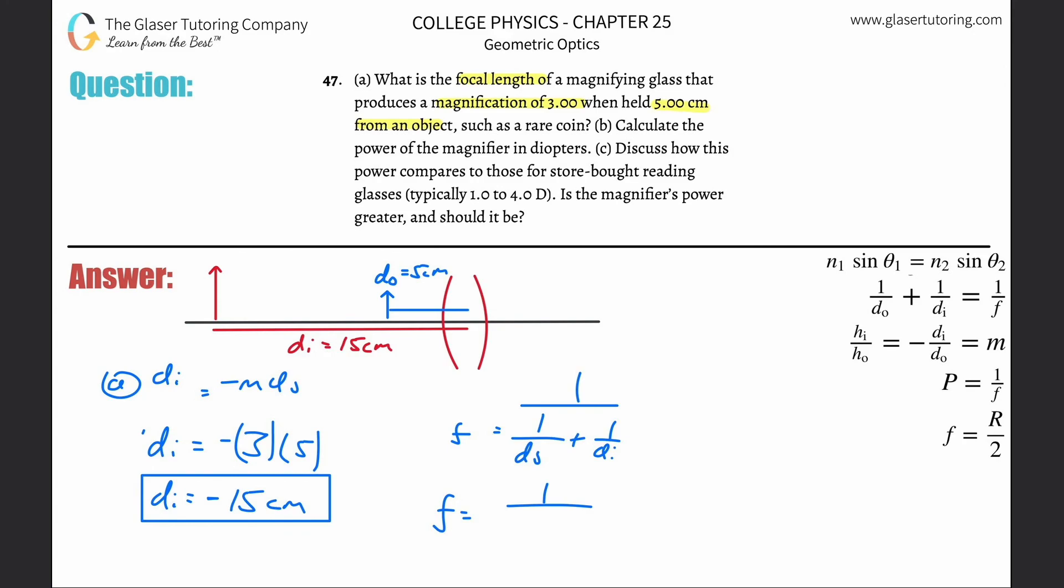I just plug in the numbers. One divided by the object distance of five centimeters, plus the image is negative 15, so one over negative 15 centimeters. Throw this into the calculator: one divided by five minus one divided by 15, that's 0.133. Then do one divided by that value, so it works out to be 7.50 centimeters. That's the focal length.